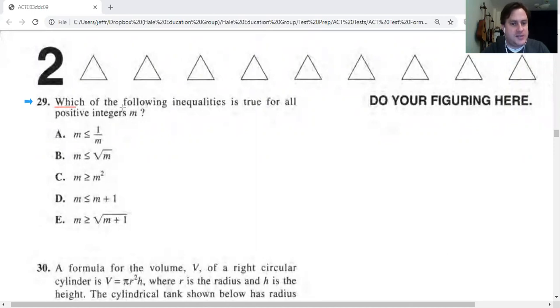So when a question like this says which of the following is true, when I have variables like M in my answer choices, that is a clue that tells me it doesn't really matter what M is. I can kind of make up values. So I'm going to pretend that M is, I don't know, it has to be a positive integer, so it has to be a positive whole number. Let's go with 2. I'm going to write that down so I don't forget.